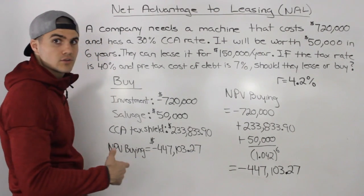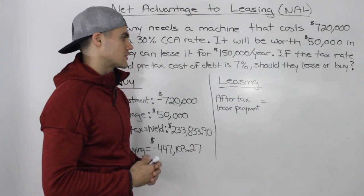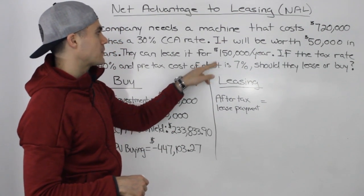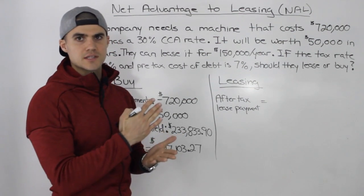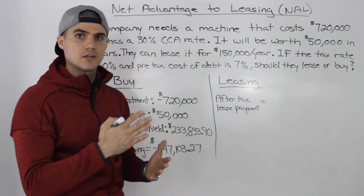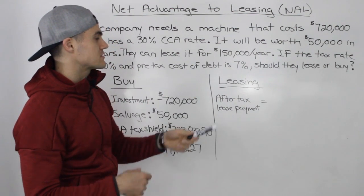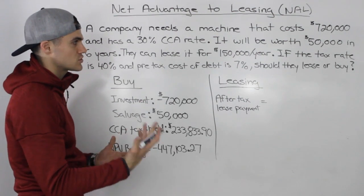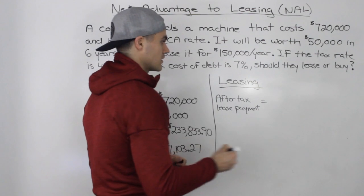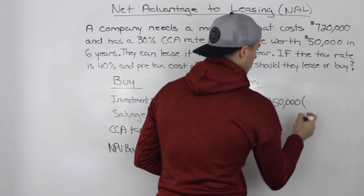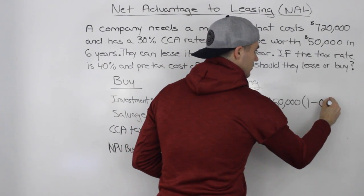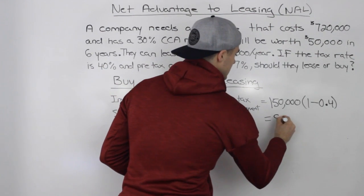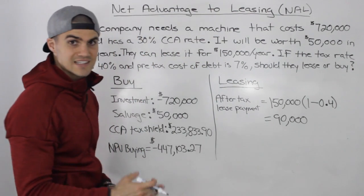Now let's move on to the leasing option. The only cash flow associated with leasing is the after-tax lease payment. The lease payment is $150,000 per year. If it's not mentioned whether payments happen at the beginning or end of the year, always assume end of the year. If it's not mentioned whether the payment is before or after tax, always assume before tax. So we take $150,000 × (1 − 0.4) = $150,000 × 0.6 = $90,000. That is the after-tax lease payment per year.